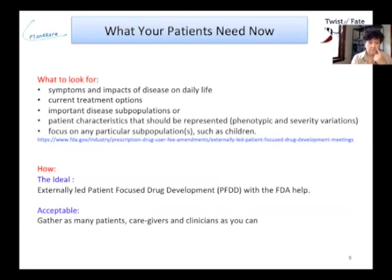As a guide for what to look for, you can follow the FDA guidelines — I indicated the website page here. Mainly, you should identify the symptoms and impact of the disease on daily life, the current treatment options, the important disease subpopulations or patient characteristics that should be represented, and the phenotypic and severity variation. Consider whether there is a need to focus on any particular subpopulation, such as children. The ideal way to gather all this information is to perform an externally led patient-focused drug development, or PFDD.